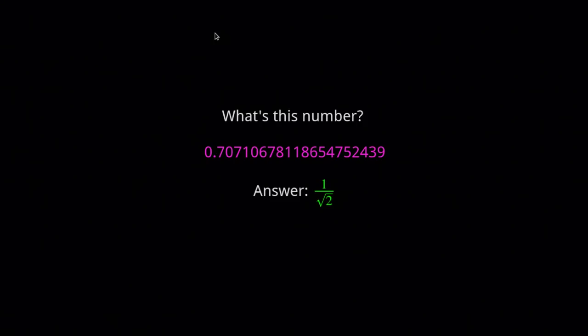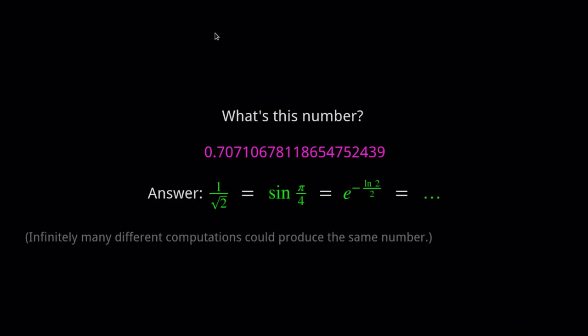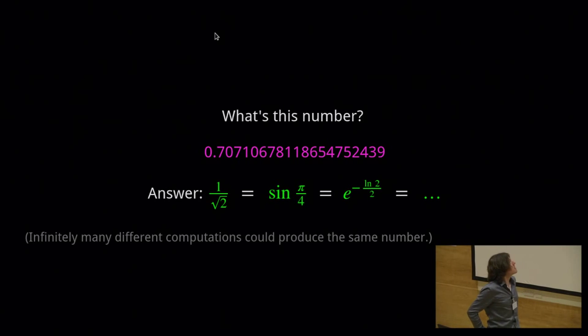That would be 1 over square root 2. And I could have equally said it's sine of pi quarters or any of these other explanations, because quite frankly, there are infinite possibilities of deriving this number. So that's one of the first difficulties. How should we even approach this problem? What's the right answer?